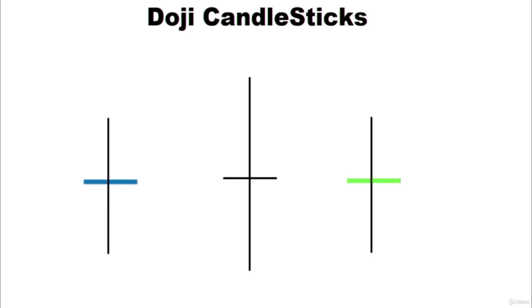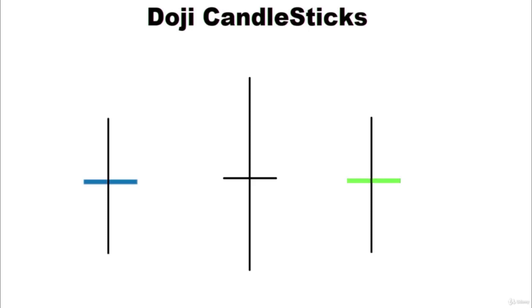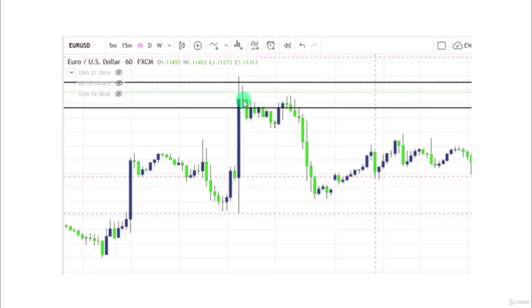A doji is a candle with the same open and close price. It is also a significant reversal candle if found near support and resistance levels. The opening price and the closing price are the same; this is the high and this is the low. Though the opening and closing price of a doji are the same, in some cases they are very near to each other. A doji candle represents indecision — it reflects a balance between buying and selling forces and signals that bulls may not maintain the uptrend because bears are stepping in, so the uptrend can change into a downtrend.